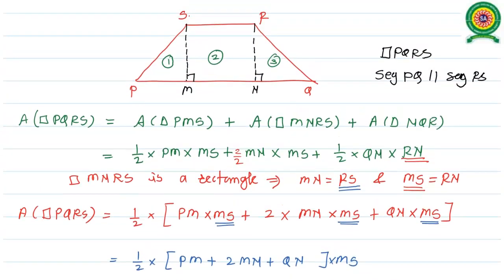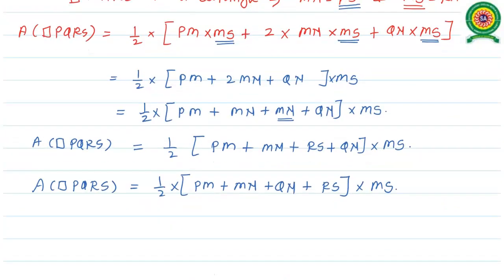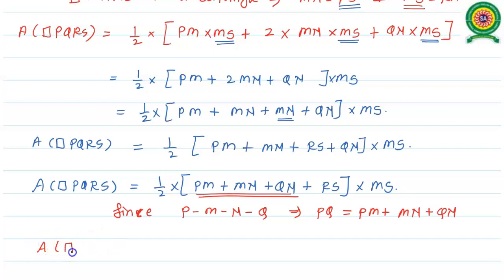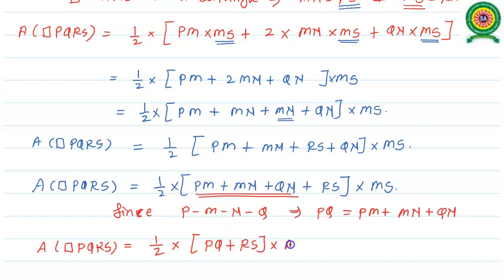Now, looking at the figure of the trapezium, P, M, N, and Q are collinear points. So the value of PQ equals PM plus MN plus QN. Looking at the bracket, the first three terms sum to PQ. So the area of quadrilateral PQRS equals half times PQ plus RS, whole into MS.